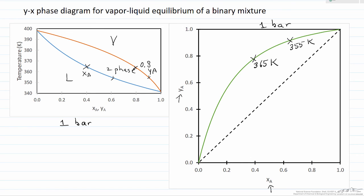The important thing to realize is this green line—every point corresponds to a different temperature for a different vapor composition in equilibrium with a given liquid composition.